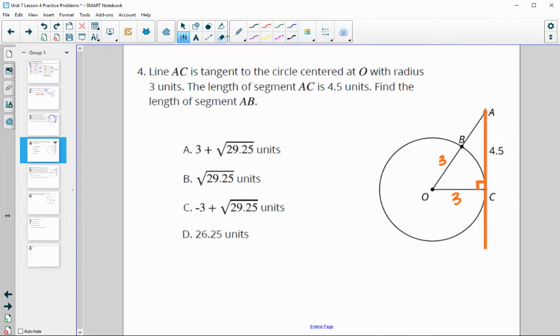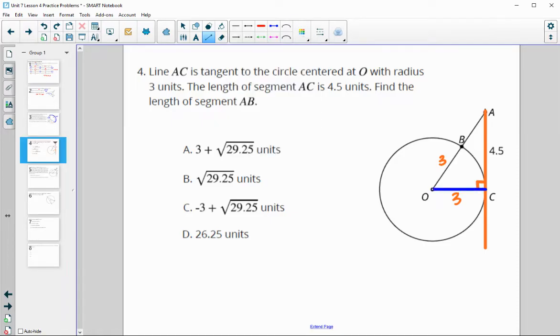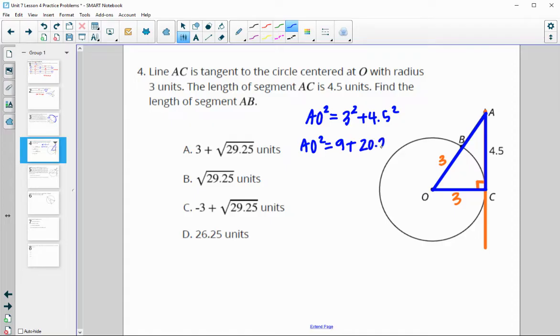Find the length of AB. So we are going to want to do the Pythagorean theorem here, looking at this leg, this as the hypotenuse, and this as our other leg. And so we will solve for this whole segment AO. So AO squared equals 3 squared plus 4.5 squared. So AO squared is equal to 9 plus 20.25. So then we get AO squared is equal to 29.25. And then we could square root both sides. I notice in the answers, it still just has the square root of 29.25. So I'm not going to type this into my calculator.